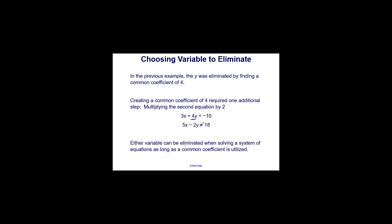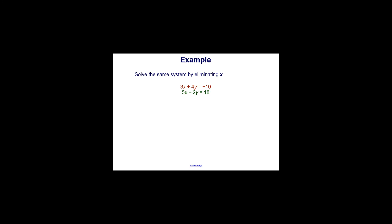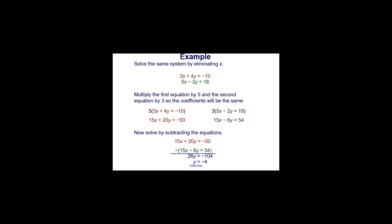Even though we chose the y variable, we could have very easily eliminated the x variable instead. Either variable can be eliminated when solving a system of equations, as long as a common coefficient is utilized. Let's see what would happen if we solved that same system by eliminating x, looking at 3x and 5x. We want to create opposite coefficients, so we multiply the first equation by 5 and the second equation by 3 — multiplying the opposite equations by the opposite coefficients. That gives us 15x plus 20y equals negative 50, and 15x minus 6y equals 54.